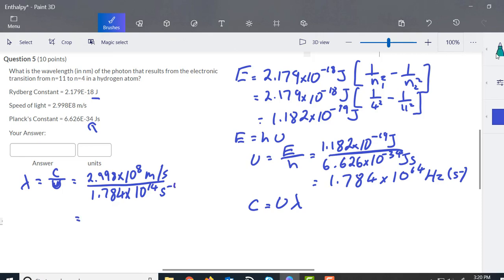That equals 1.680 times 10 to the negative 6 meters, that's got four significant figures.